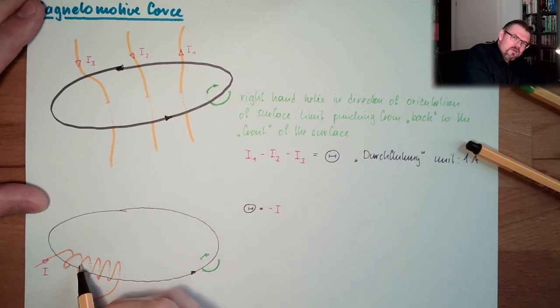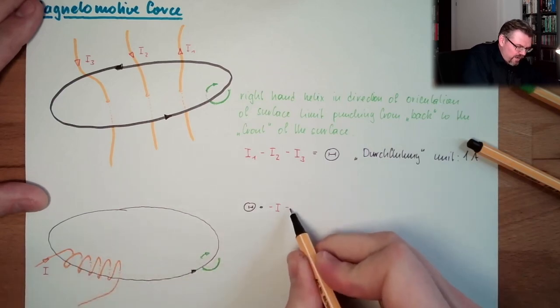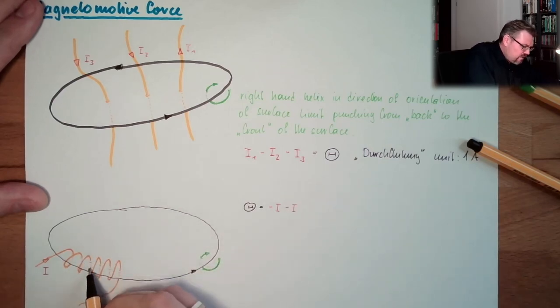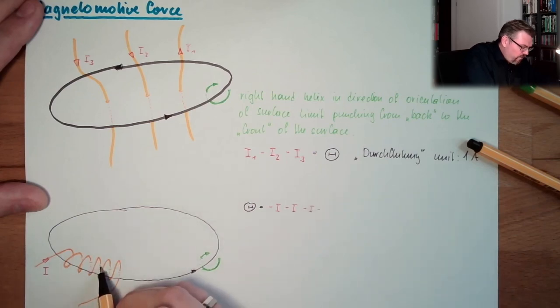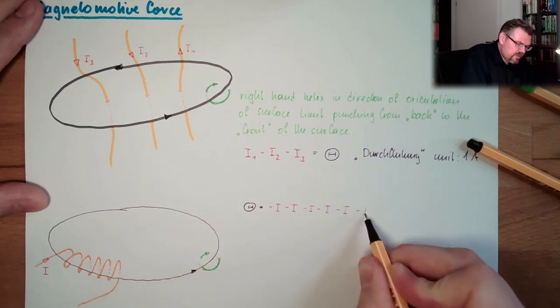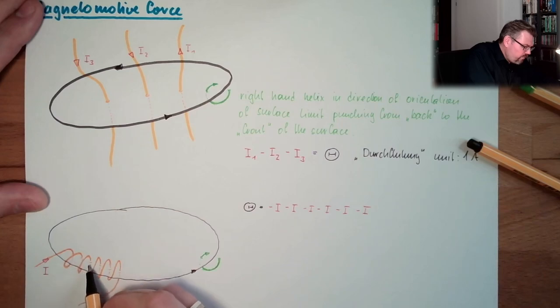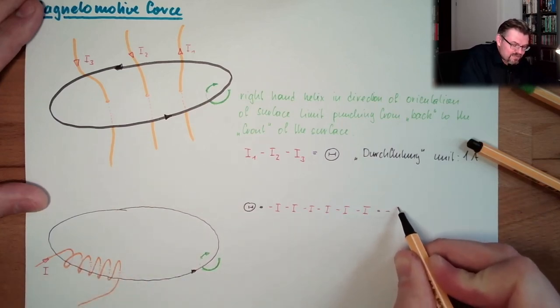Here we're punching. I cannot count because it's outside my surface. Here a second time, it's the same current. But I don't know if this sneaked around the surface somewhere else. Here's a second time, again minus I. Third, minus I. Fourth, minus I. Fifth, minus I. Sixth, minus I. One, two, three, four, five, six times this current. So it's actually minus six I.